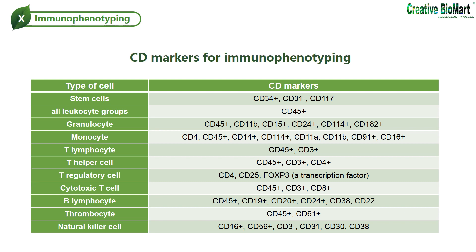The CD3 surface antigens form part of the T-cell receptor complex for antigens. As such, CD3 is expressed exclusively by mature lymphocytes of the T-cell lineage. CD4 and CD8 are, in general, used as markers for the helper and cytotoxic T-cells, respectively. These molecules are defined in combination with CD3+; some other leukocytes also express these CD molecules — some macrophages express low levels of CD4, and dendritic cells express high levels of CD8. In addition, CD20 is an antigen found exclusively on lymphocytes of the B-cell lineage.